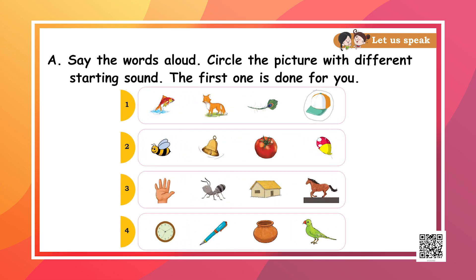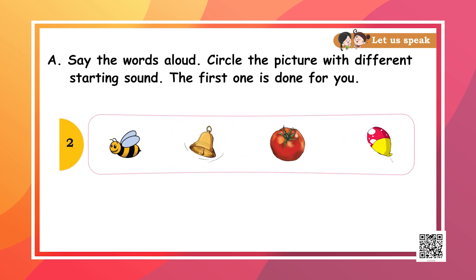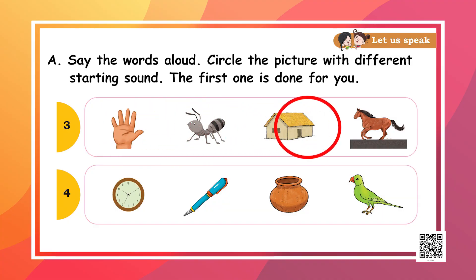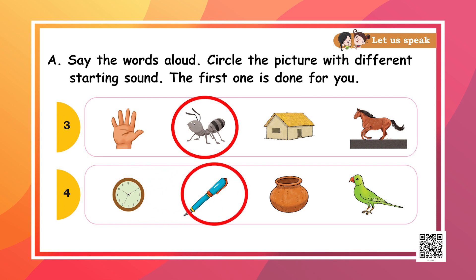So here comes a task for you. Can you look at these pictures, say their names loud and find out which picture does not have the same beginning sound as the others? As I can see in the picture, there is a bee, bell, tomato and a balloon. So which word does not have the same beginning sound? That's tomato. Similarly, in each row there are four pictures given, but there is one picture that has a different beginning sound. Identify and circle that picture.